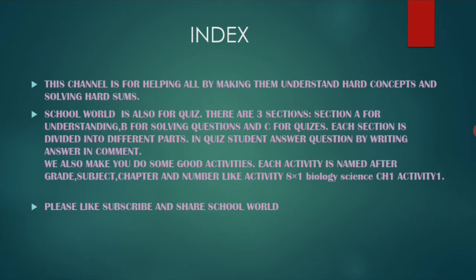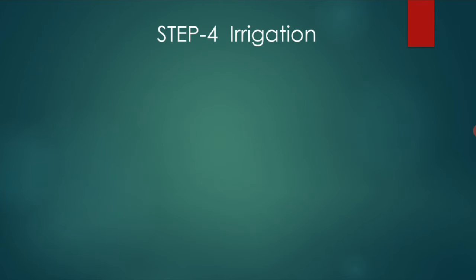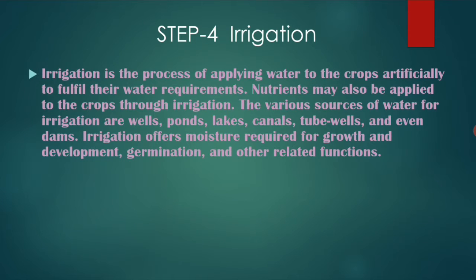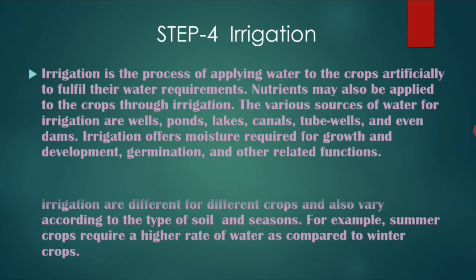Step 4: Irrigation. What is irrigation? Irrigation is the process of supplying water to all the crops in the field. Nutrients are also absorbed by the water and reach the plants. Some sources of water for irrigation are wells, ponds, lakes, canals, tube wells, and even dams.